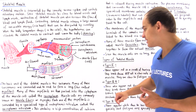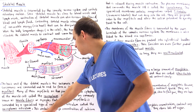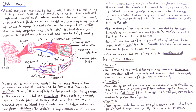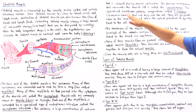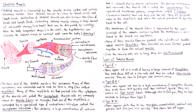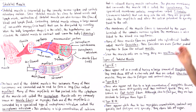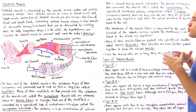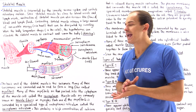The sarcoplasmic reticulum contains a high concentration of calcium that is released during muscle contraction. The plasma membrane surrounding the muscle cell is called the sarcolemma. This specialized membrane contains invaginations known as T-tubules or transverse tubules that run perpendicular to our myofibrils and run very deep into the cell, allowing the action potential to travel through the cell quickly and efficiently.